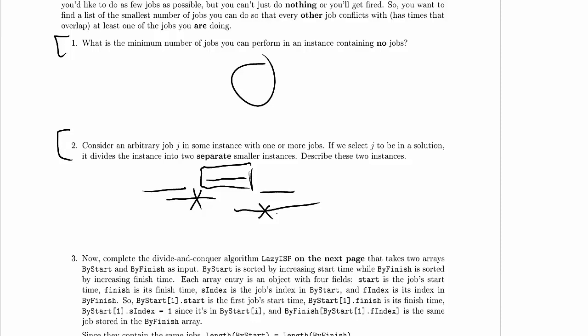And the answer is, yes, they are. Nothing on this left side can possibly overlap with anything on this right side. Because if it did, it would have to cross the job in the middle here. It would have to cross job J.